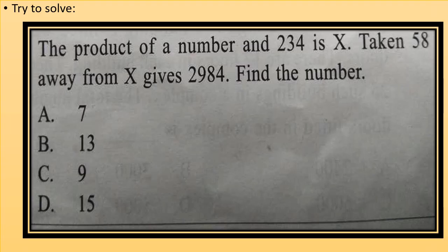The product of a number and 234 is X. X taken 58 away from X gives 2984. Find the number. I have solved the question in my previous videos. Try to solve the question.